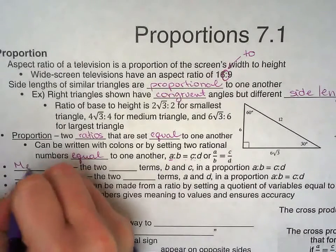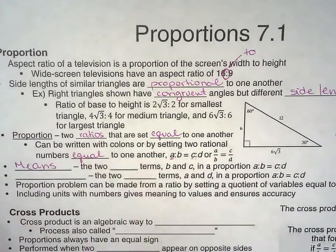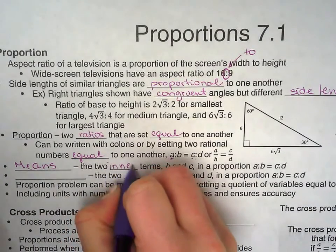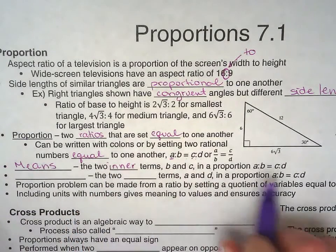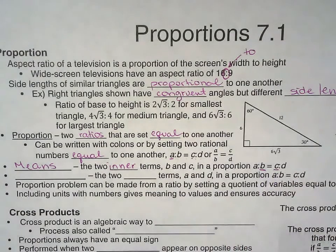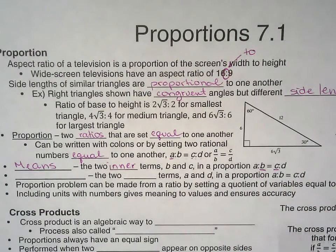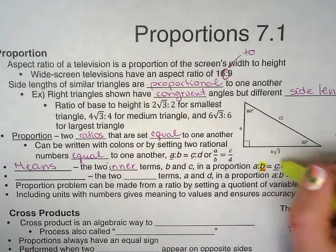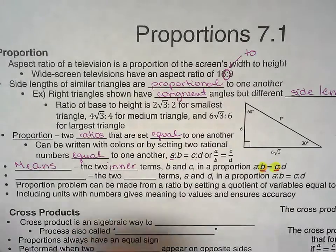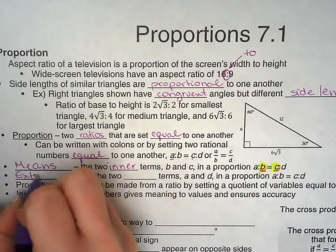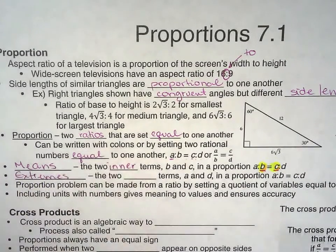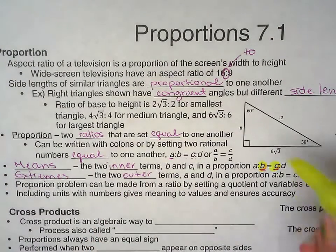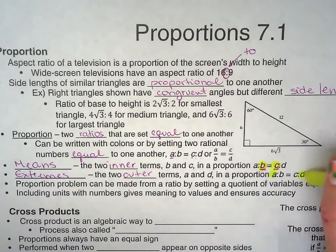Now some vocab here: means are the two inner numbers. For example, this one and this one. I'm going to highlight for you, this one and this one, the two inner numbers. Now the extremes are the two outer numbers, this one and that one.